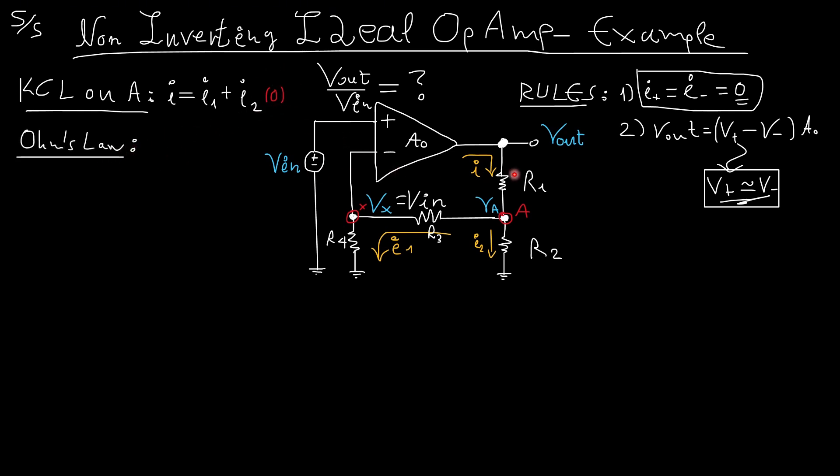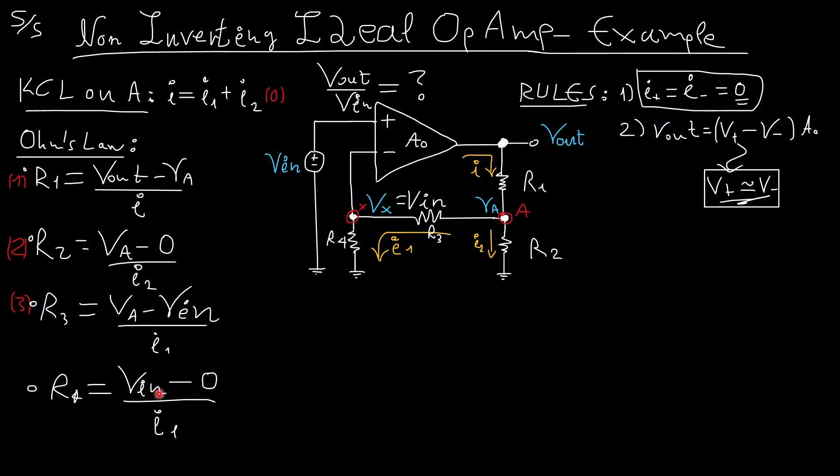I is equal to I1 plus I2. This is equation 0. So we are going to apply Ohm's law. First, here, R1 must be equal to Vout minus VA over I. R2 must be equal to VA minus 0 over I2. R3 must be equal to VA minus Vin over I1. And R4 must be equal to Vin minus 0 over I1. Again, I notice I1 is the same here. I divide these two equations. And I get this result.